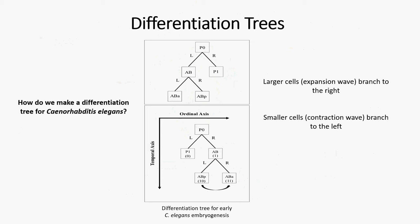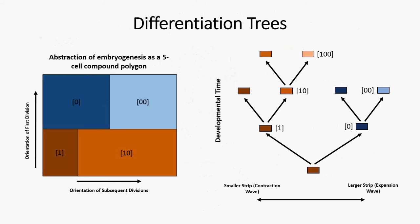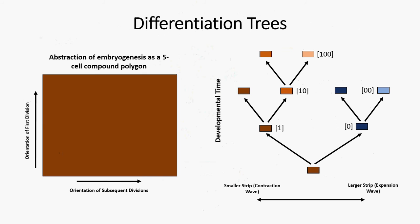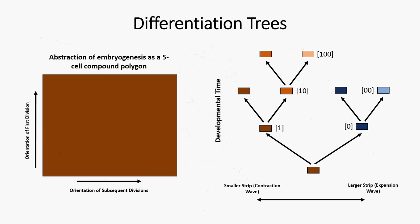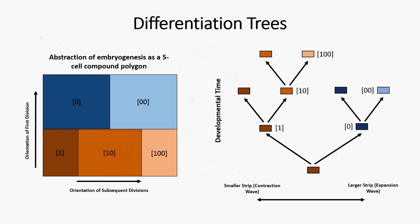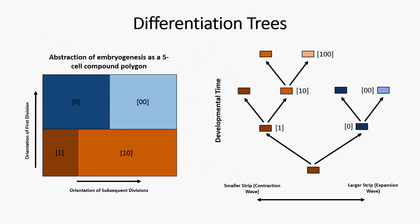Those terms are relevant to differentiation tree theory or differentiation wave theory, something you can read about more from Dick Gordon's work. This is an abstraction of embryogenesis as a dynamic process, and we've built a differentiation tree from this process. It's very easy to see how the process of differentiation, especially asymmetric differentiation, maps to a tree structure.